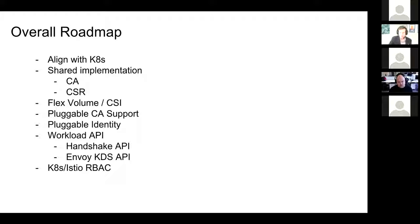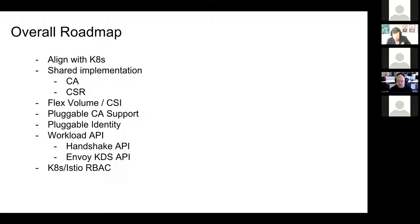Even with the KDS API, you still have the bootstrapping problem — how does whoever is on the other end of that KDS API verify that the Envoy is who it says it is, so it can then get the right key material? The way we plan to solve this: the node agent is running at the same node or same pod as the workload, so we can either use UDS or use PID to build up the trust.